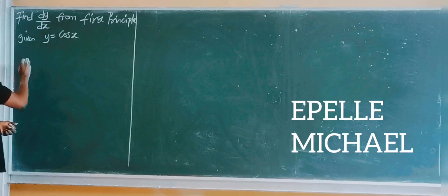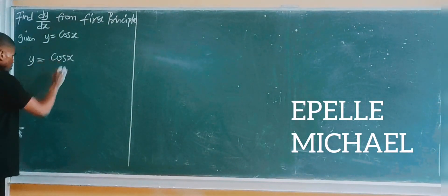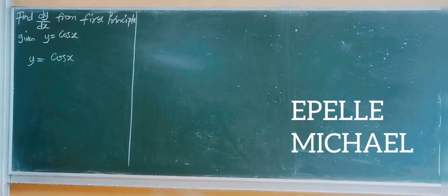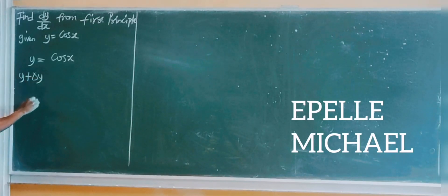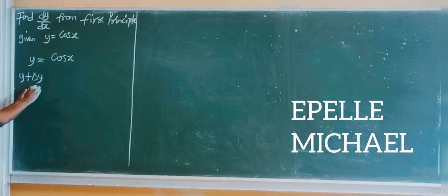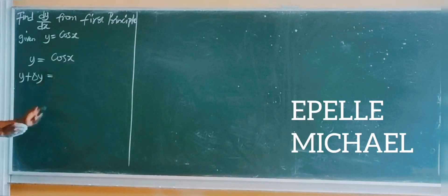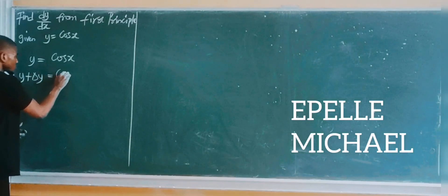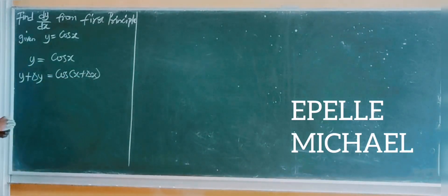We have that y equals cos x. If I increase y by Δy — so y plus Δy — I will also increase x by Δx. So this will simply be equal to cos(x + Δx).